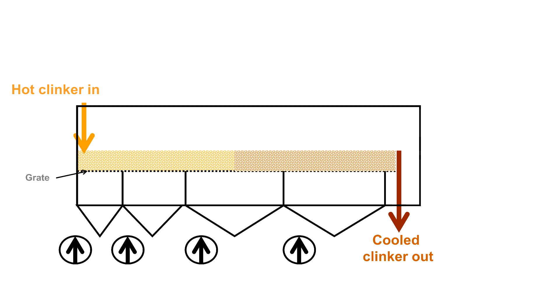The clinker travels along the cooler on some sort of a grate. We also expect to recover hot air for combustion. This means we have to blow air in the box, under the grate. This air will go through the grate, cool down the clinker, and become very hot.